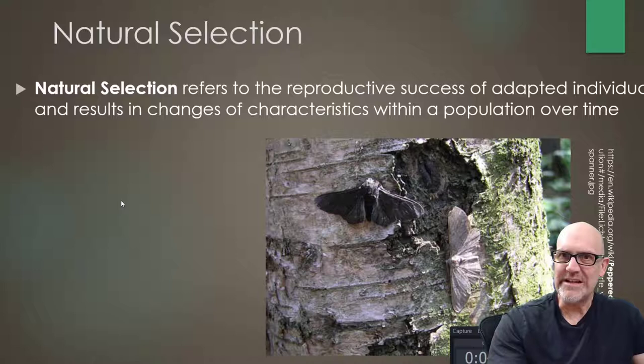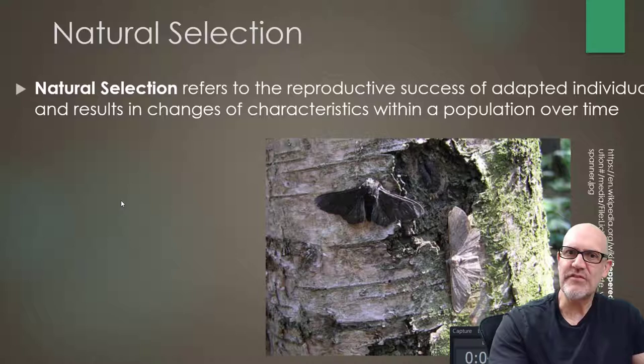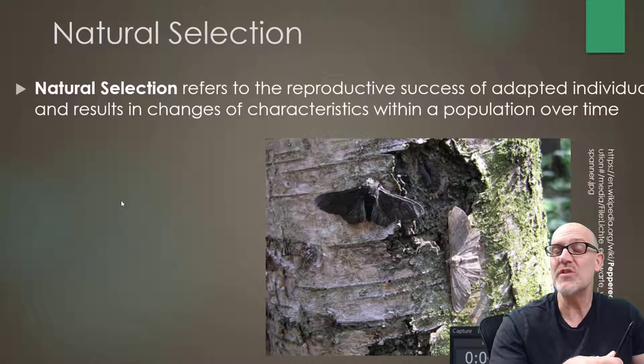Now we know what adapted individuals means, and that brings us to the rest of natural selection. If white moths are only left to mate with white moths, that means they're going to pass on their alleles or their traits for the color white to the next generation. And that leads us to the rest of the definition: it results in changes of characteristics within a population over time. In other words, you're going to have more and more white moths proliferating in this population, and of course this happens over time. That is, in a nutshell, natural selection.